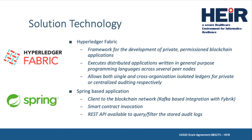The HAIR auditing mechanism is based on Hyperledger Fabric, a well-known and enterprise-mature framework for the development of private, permissioned blockchain applications. It allows for both isolated single-organization or even cross-organization auditing. The HAIR auditing mechanism is equipped with a client application that provides a REST API and a Kafka interface to achieve integration with the privacy-aware framework.